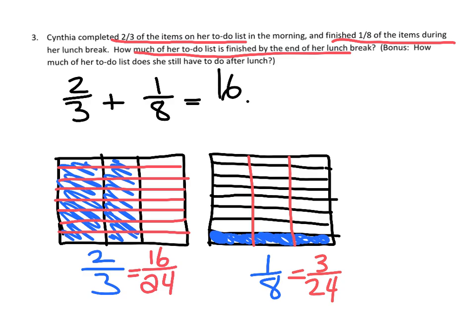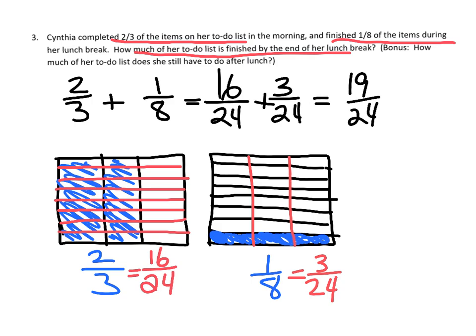16/24 plus 3/24 equals 19/24. So she has finished 19/24 of her to-do list.